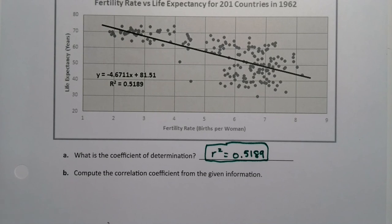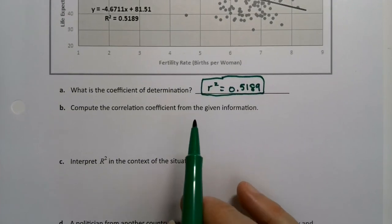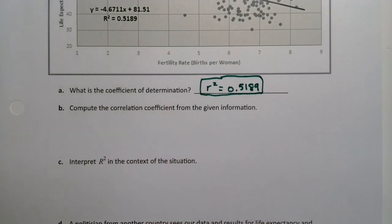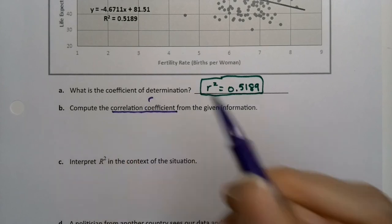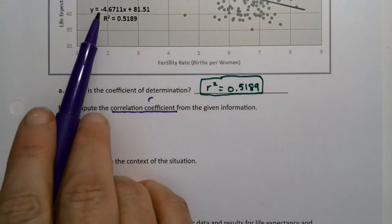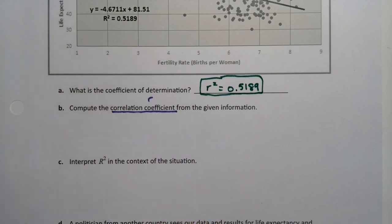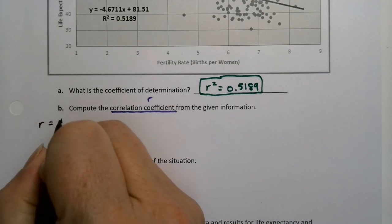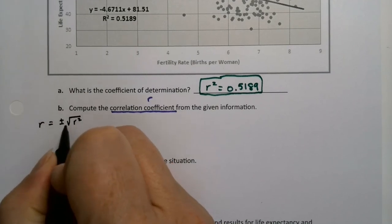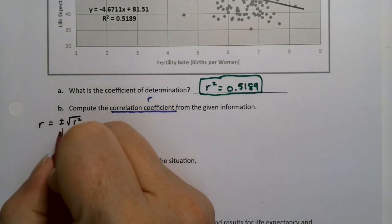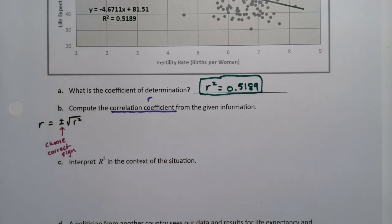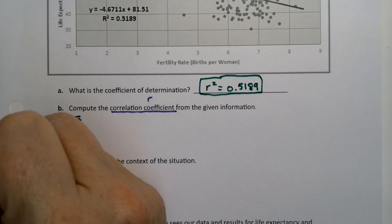Now we want to compute the correlation coefficient from the given information. So correlation coefficient is r, not r-squared. So we're looking for r. And again, they use capitals for Excel. Don't worry about it. Capital letter, lowercase letter, tomato, tomato. It's fine. Remember that r is plus or minus the square root of r-squared, and you have to choose the correct one.